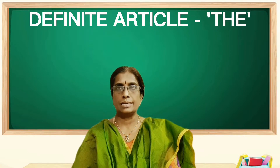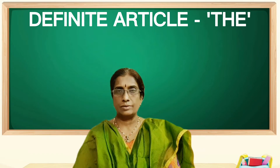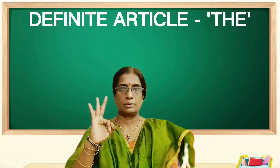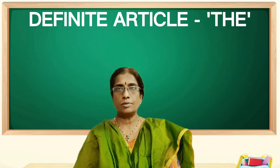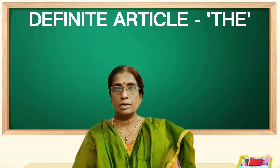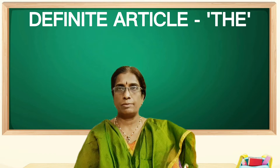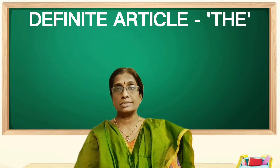We have learned that articles a and an are used when we talk in general, when we talk for the first time, and before singular nouns. Now let us learn more about the article 'the'. The is used before a noun to define it as something specific, definite, particular, or something previously mentioned by the speaker. In brief, remember: article 'the' is used when we talk the second time. The first time, in general, we use 'a', but when we talk the second time, we use 'the'.